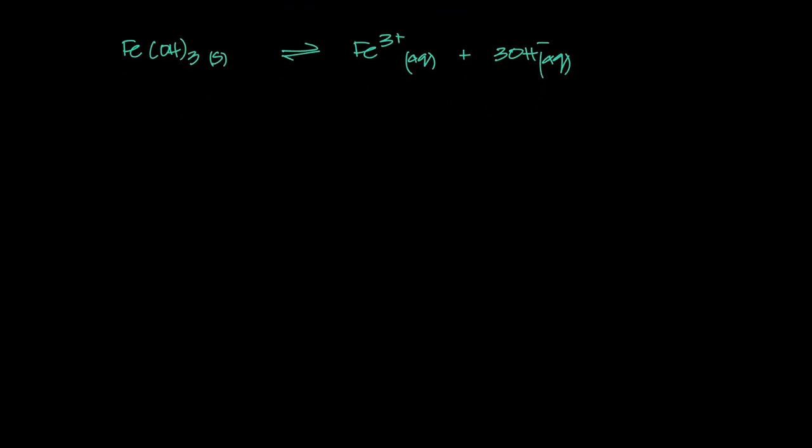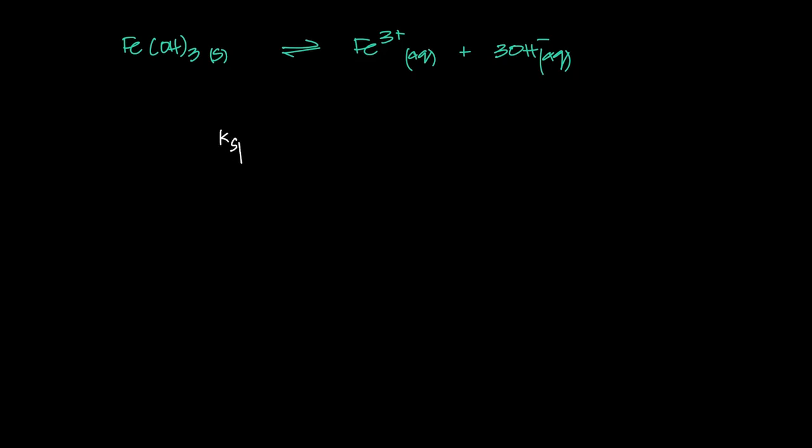One last example: let's say iron(III) hydroxide, which is Fe(OH)₃. So what I want to do is write the Ksp expression for this and the units for this. So Ksp for this would be what? One Fe³⁺ and three hydroxides - that will be hydroxide cubed.